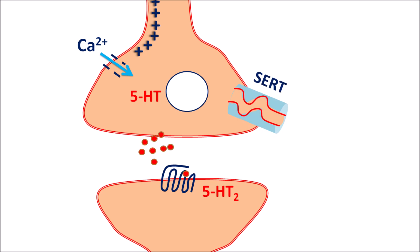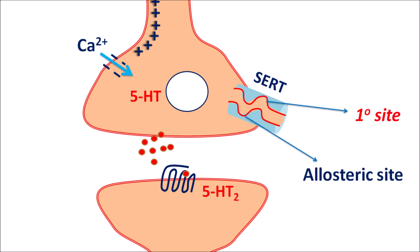The reuptake transporter is SERT — serotonin reuptake transporter. This transporter has two sites: a primary site and an allosteric site. Both of these sites are required for reuptake of 5-HT. The 5-HT released by exocytosis can be taken back into the nerve terminal through SERT. Sertraline inhibits this reuptake.